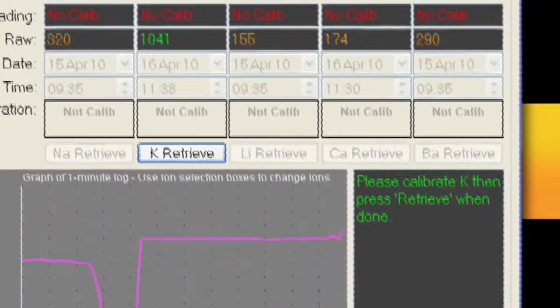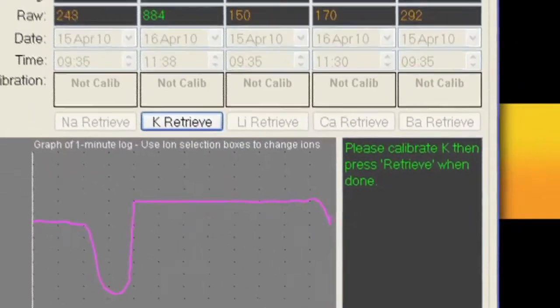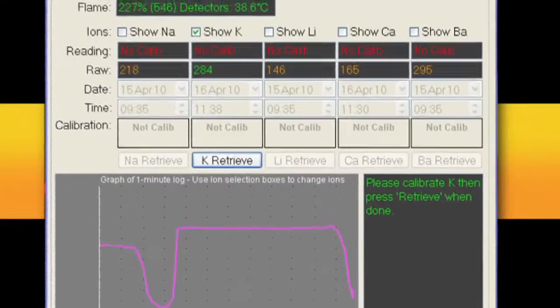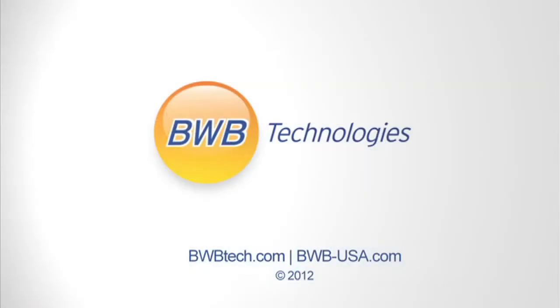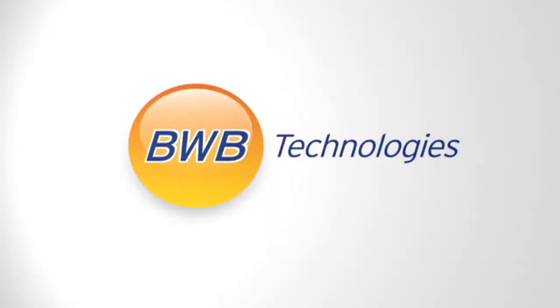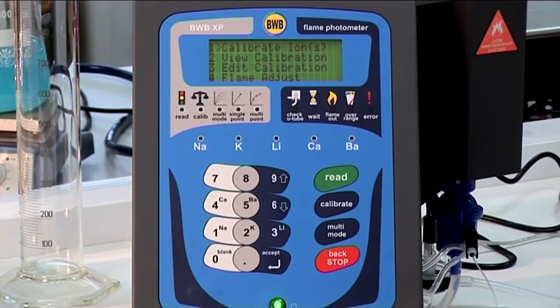If we want to calibrate several ions at several calibration points, we could repeat a multi-point calibration for each ion, but this would be quite time intensive. The BWB XP offers the user a multiple ion, multi-point calibration.